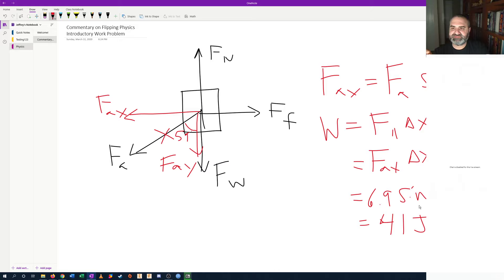You'll also note when he talks about the work done by the force of weight and the work done by the force normal, he goes through and says, well, the cosine of the angle between the force and the displacement is 90 degrees.